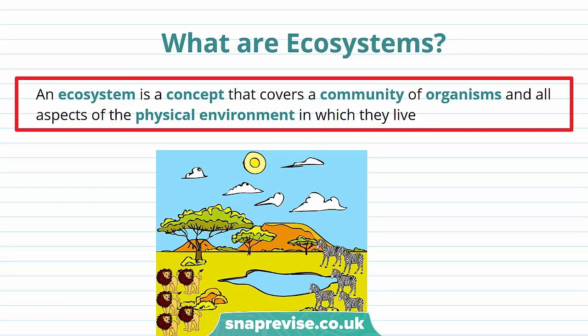Our whole world is divided up into ecosystems. Ecosystems can be small scale and cover a small amount of area — for example, the pond in your garden could be an ecosystem. However, they can also be large scale, such as a tropical rainforest or savannah. An ecosystem is a concept that covers a community of organisms and all aspects of the physical environment in which they live.